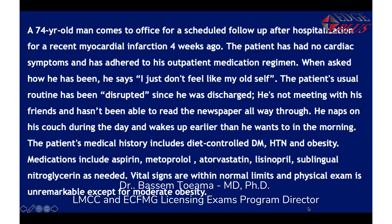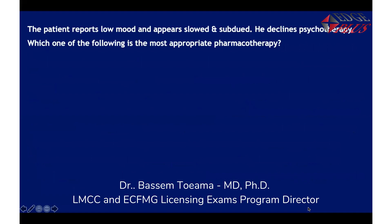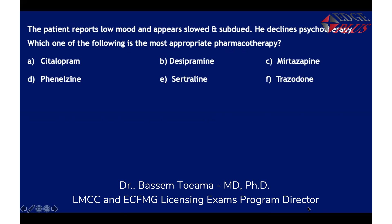Keep the medications in mind — aspirin, metoprolol, atorvastatin, lisinopril, sublingual nitroglycerin — because you'll need these when answering the question. The question: the patient reports low mood, appears slowed (psychomotor retardation), and subdued; he declines psychotherapy. Which of the following is the most appropriate pharmacotherapy? The options are: citalopram, desipramine, mirtazapine, phenelzine, sertraline, trazodone, venlafaxine.